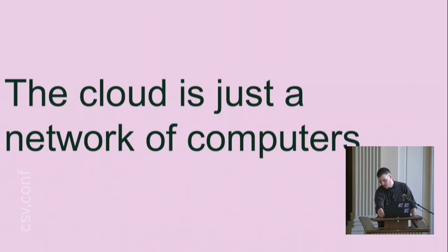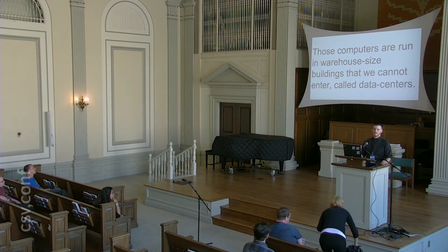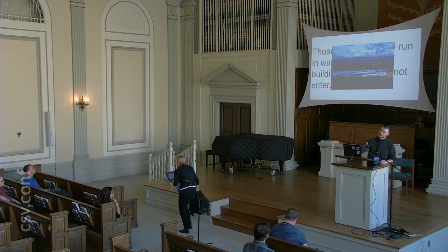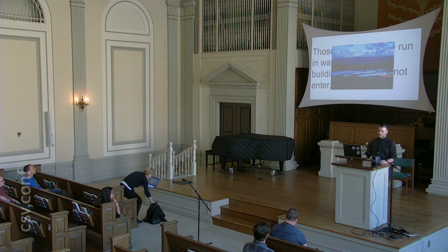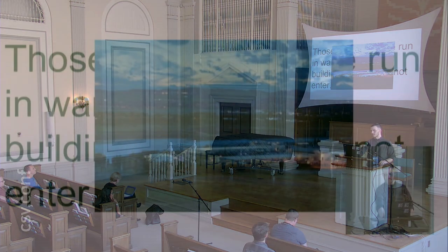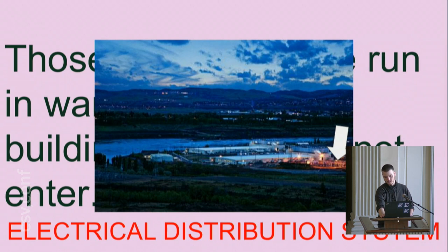A good tentative definition would be something like: the cloud is just a network of computers, and those computers are run in warehouse-sized buildings that we call data centers — and we probably can't get into them. Here's a picture of one such data center. This is Google's data center in Dallas, a little bit down the road from here. There are the warehouses, some cooling systems, and I think that's an electrical distribution system. And your data is somewhere near there.